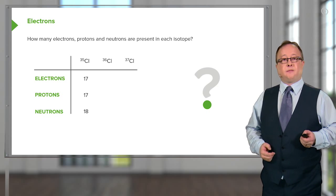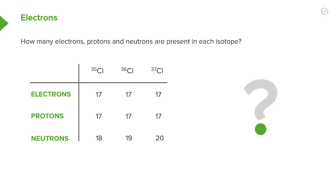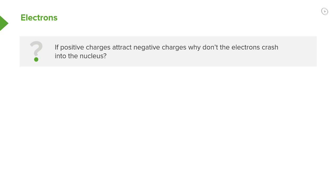Let's have a look. In the case of 35Cl and 37Cl, we have the same number of electrons and the same number of protons. In the case of each of our isotopes, there is a different number of neutrons: 18, 19, and 20. As discussed, if we have a positively charged nucleus, why isn't the negative charge of the electron causing the electron itself to move towards the nucleus? What stops the electrons from crashing into the nucleus?